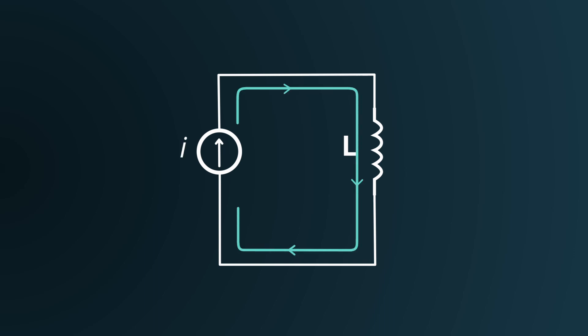Imagine an inductor with an inductance denoted as L. If we were to send a current, labeled I, coursing through this inductor, how would we determine the voltage drop across it?